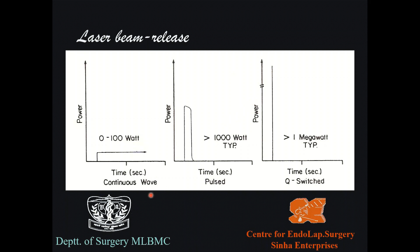The laser beam can be released in several modes. Continuous wave (CW): the aperture stays open as long as you press the pedal. Pulsed mode: the aperture opens for a very small fraction of time. Q-switched mode: open for an even shorter time — nanoseconds. In Q-switch mode, even at only 100 watts of base power, you can reach nearly one megawatt energy in a nanosecond burst.